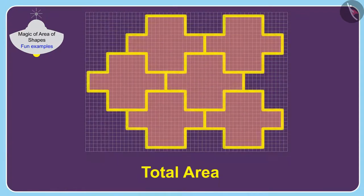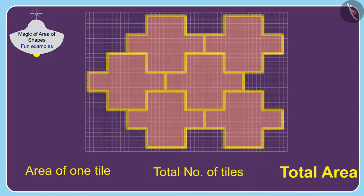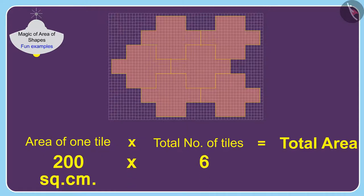To find the total area, we only have to multiply the area of one tile by the number of total tiles. In this way, the total area covered by the tiles will be 200 multiplied by 6, which equals 1,200 square centimeters.